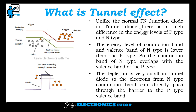Unlike the normal P-N junction diode, in tunnel diode there is a high difference in the energy levels of P type and N type. The energy level of the conduction band and valence band of N type is lower than the P type, so the conduction band of N type overlaps with the valence band of the P type. The depletion region is very small in tunnel diode, so the electrons from the N type conduction band can directly pass through the barrier to the P type valence band.